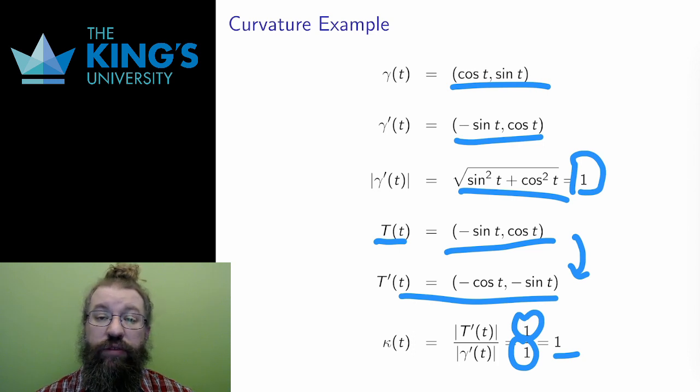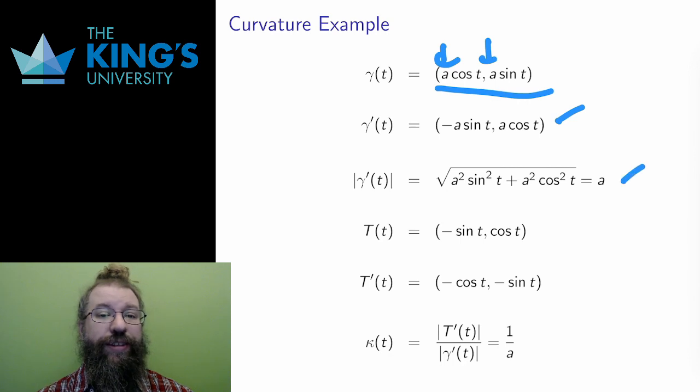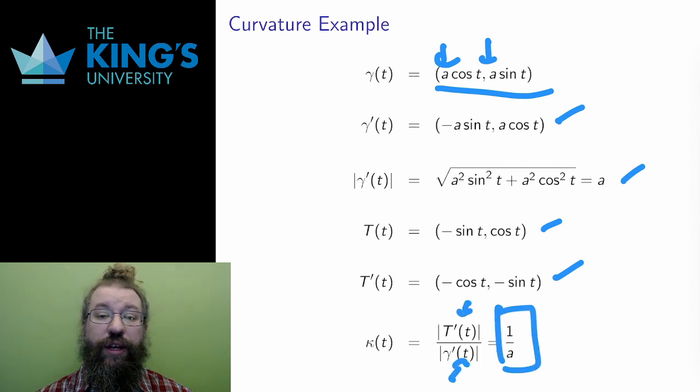Finally, I can change the radius of the circle to A using this curve. I repeat the same steps. The tangent, the length of the tangent, the unit tangent, the derivative of the unit tangent, the length of this derivative, and finally the curvature ratio. I do find that the curvature of a circle of radius A is exactly the reciprocal 1 over A as I claimed.